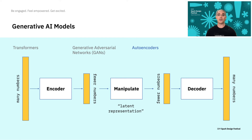The first piece of the autoencoder model is the encoder, which reduces our long list of numbers to a much smaller list. This smaller list is known as the latent representation of the thing. And this is where the magic happens: when we manipulate this representation by changing around the numbers, it causes it to change in meaningful ways after it's gone back through the decoding process.